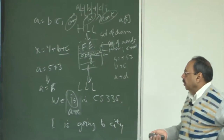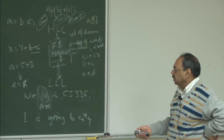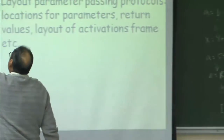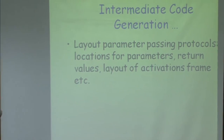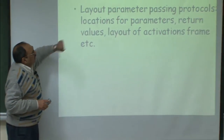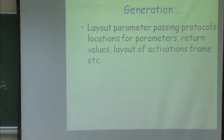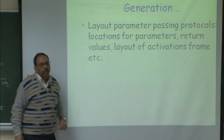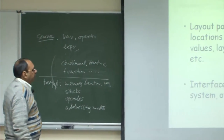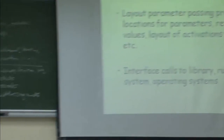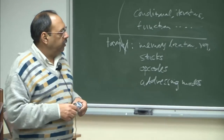I want to map all operators to opcodes and convert conditionals and iterations into sequences of test-and-jump instructions. Intermediate code generation also lays out parameter passing protocols, return values, and activation frames for functions. Interface calls to libraries and runtime systems are also handled. We will continue from this point in the next class.